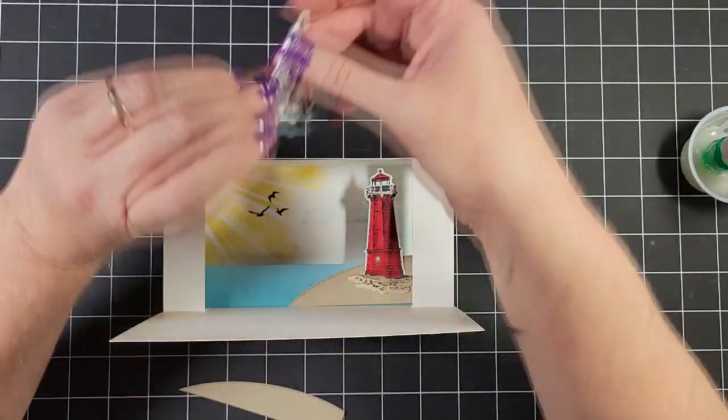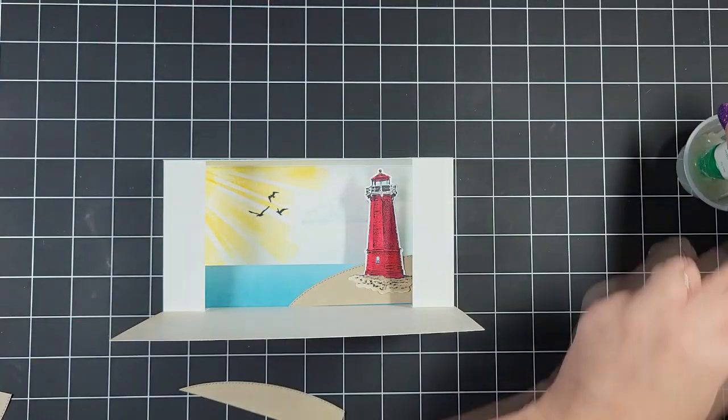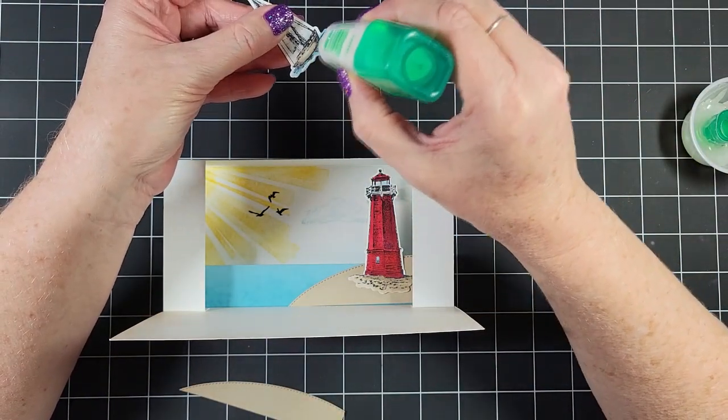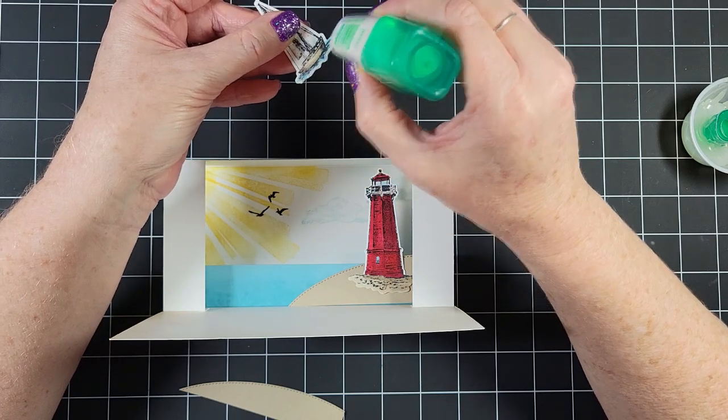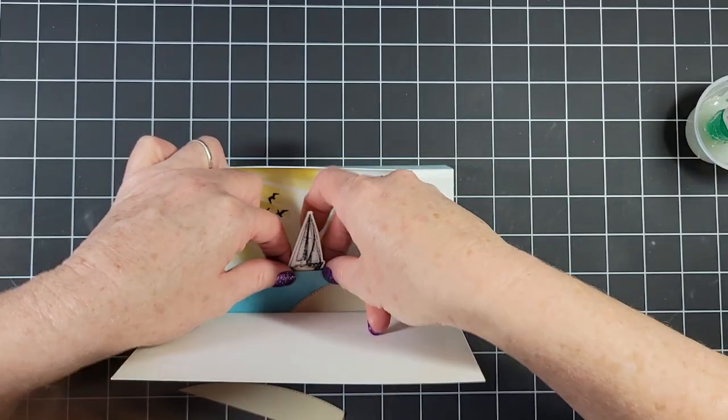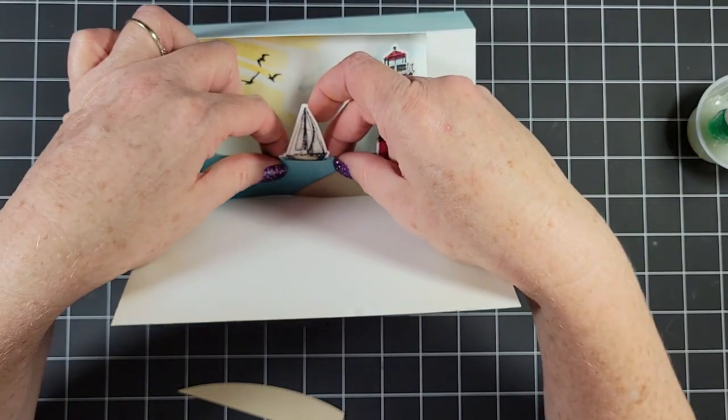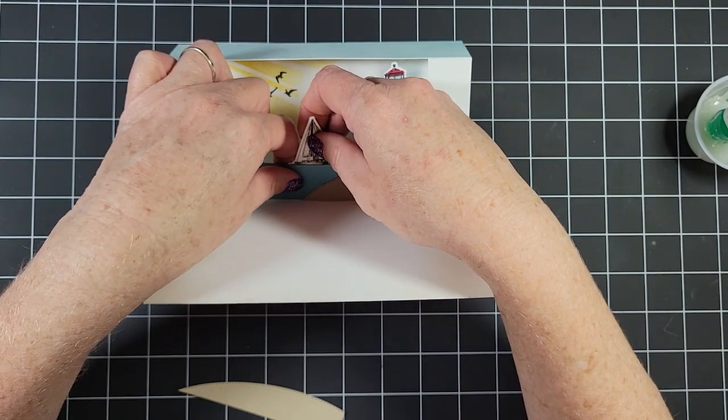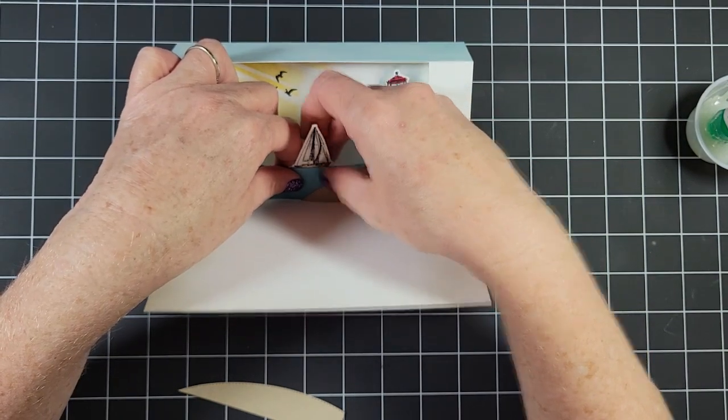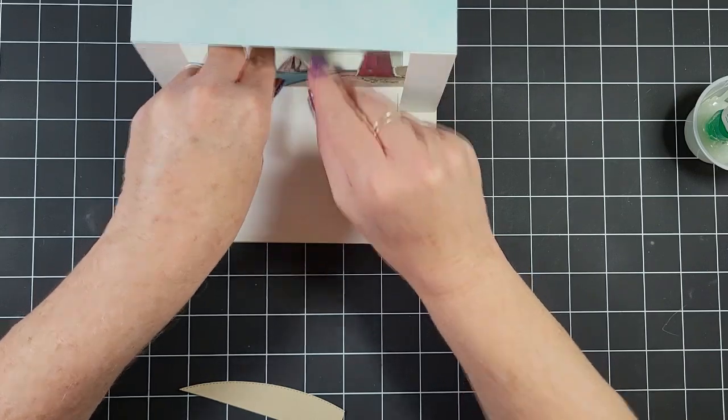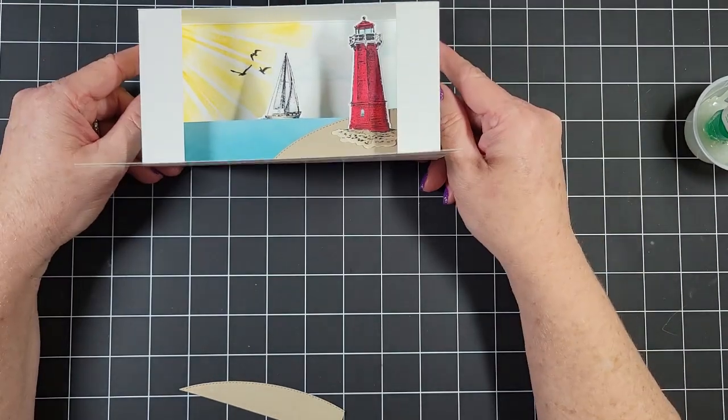Okay. So now that we have that done, I can add our little sailboat. So I'm going to put the glue here on the front of the boat because I want it to look like it's sitting on the water. So I'm just attaching that there to the backside of that blue strip and kind of holding it for a minute so that it has a chance to grab. And there we have it.